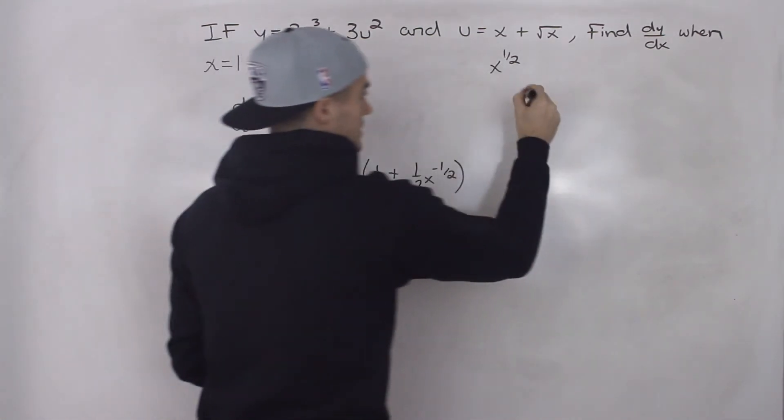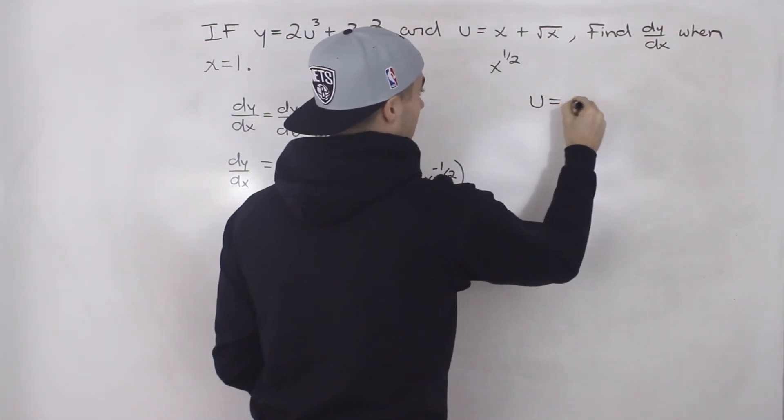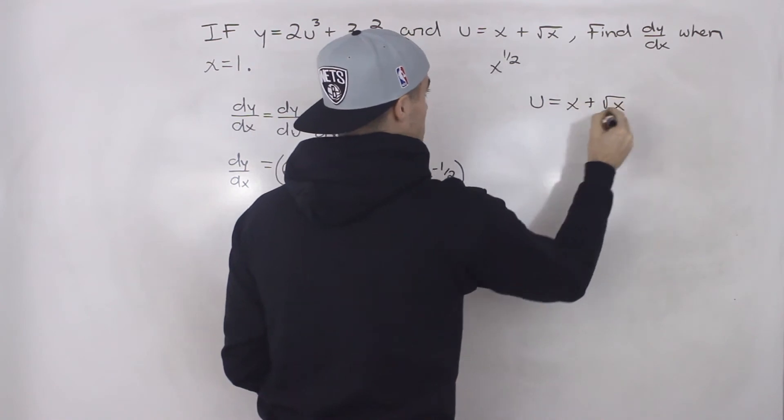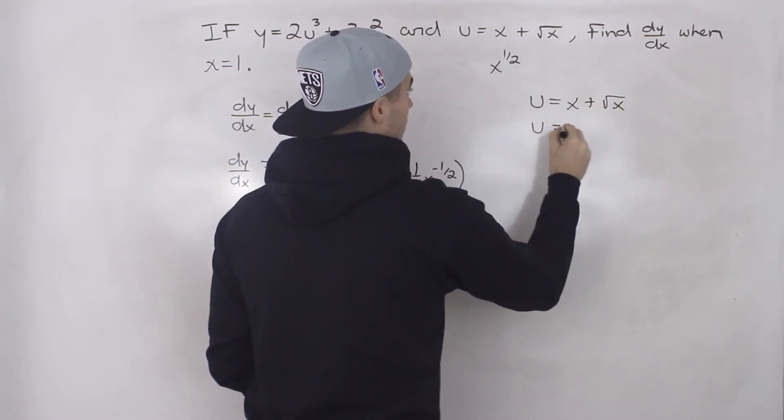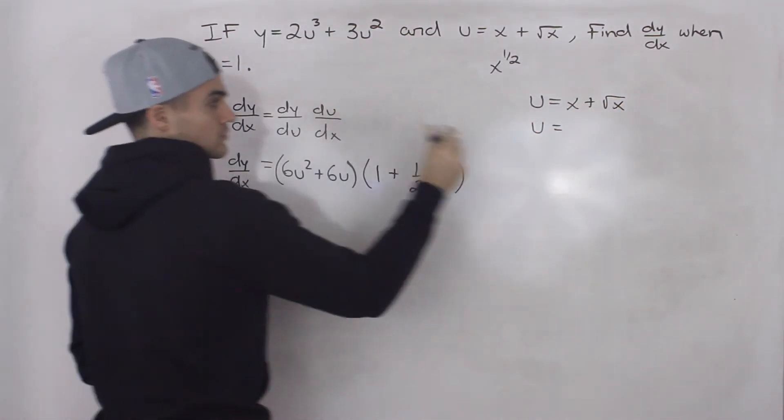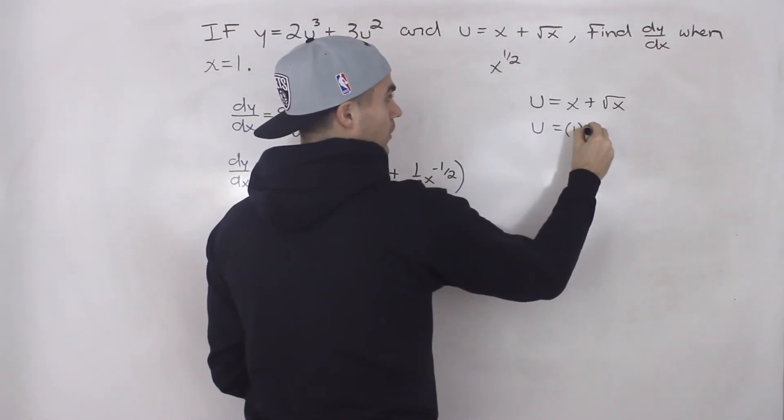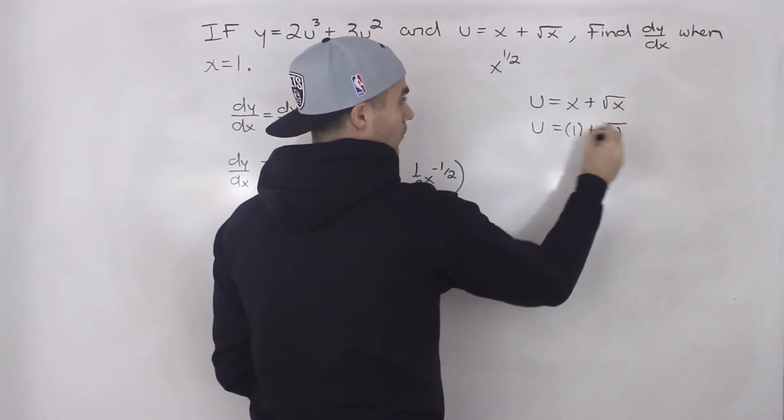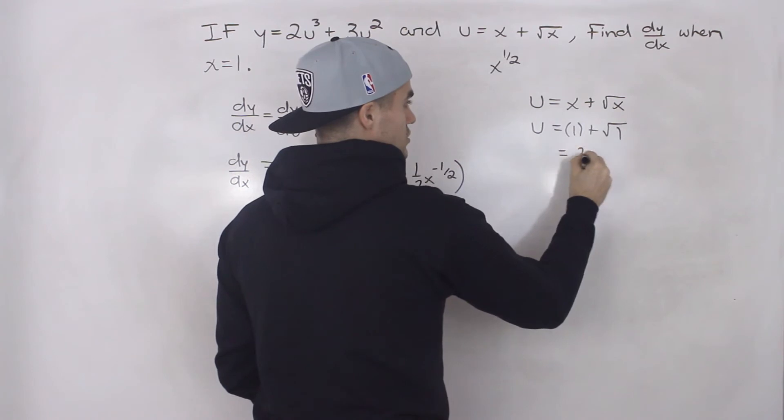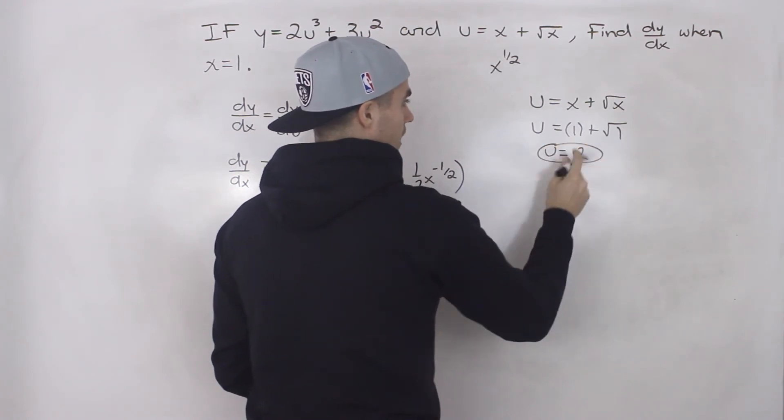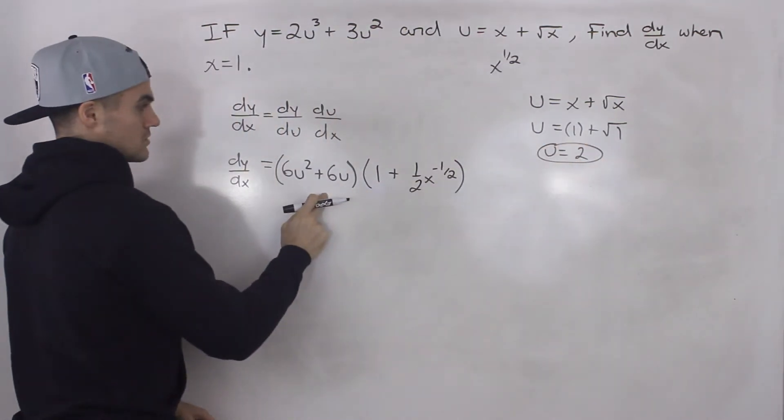So what we got to do is we got to take this u value here, x plus the square root of x, and we have to find the value of it when x is equal to 1. So if we plug in 1 for all the x's, 1 plus the square root of 1 is just 2. So we plug in a u value of 2 into this bracket.